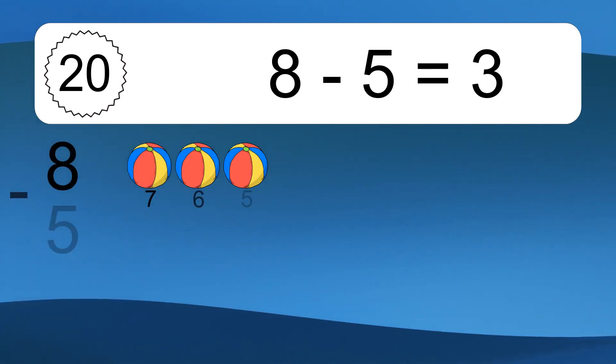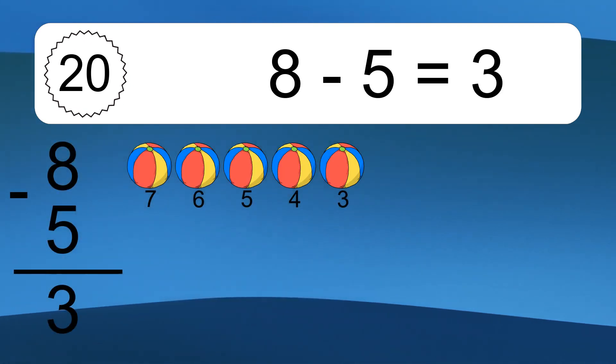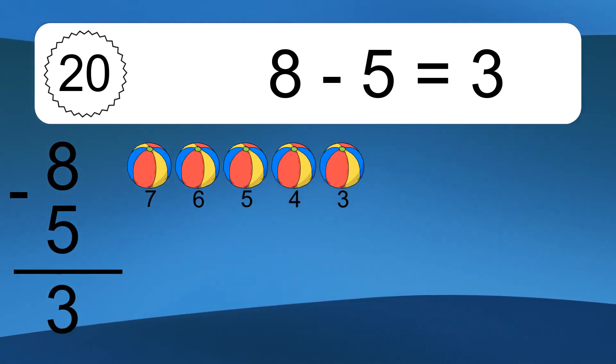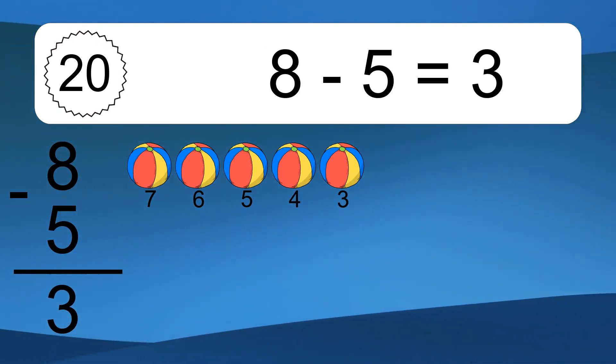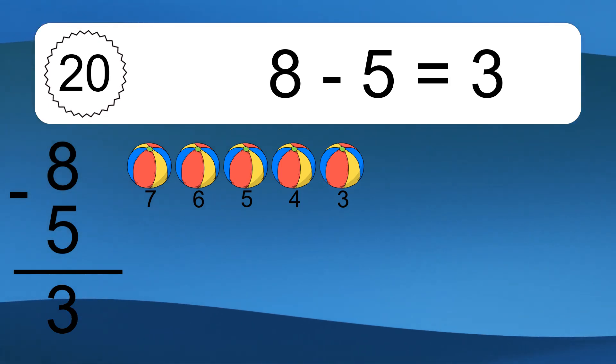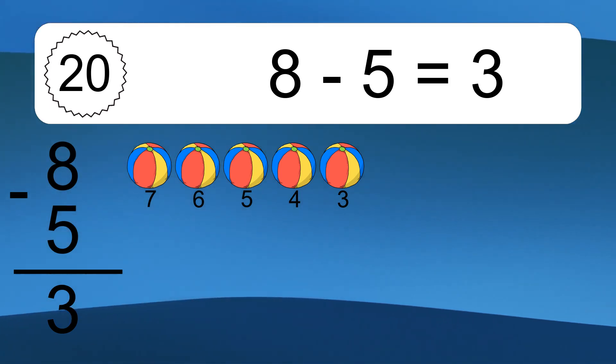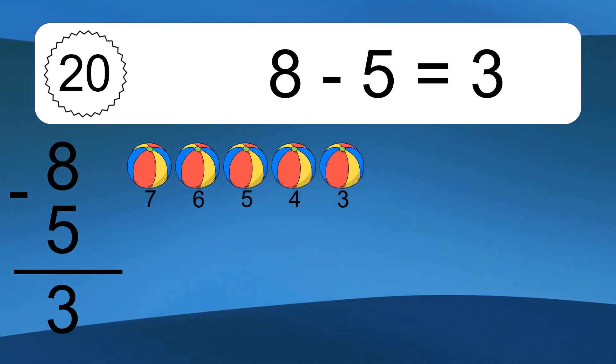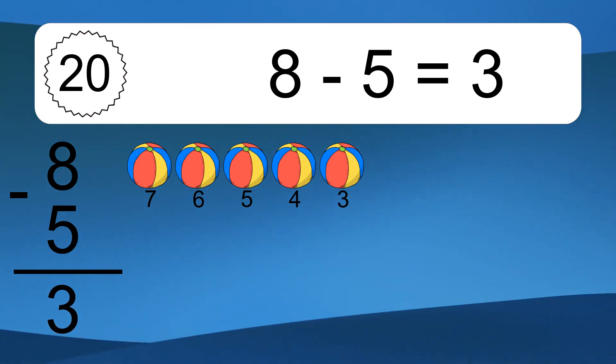8 minus 5 equals what? 8 minus 5 equals 3. Let's count it: 7, 6, 5, 4, 3.